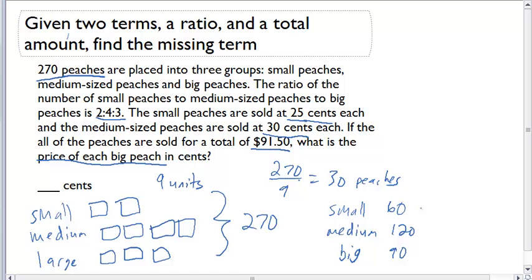Now, we also are given some pricing information, because the question doesn't ask how many of each that we sold. It actually wants to know the price of a big peach. The small peaches were 25 cents. So let's multiply 60 times .25. That's going to be $15. Medium times .30 is going to be $36. So we know that we sold a total of $51 between the small and the medium.